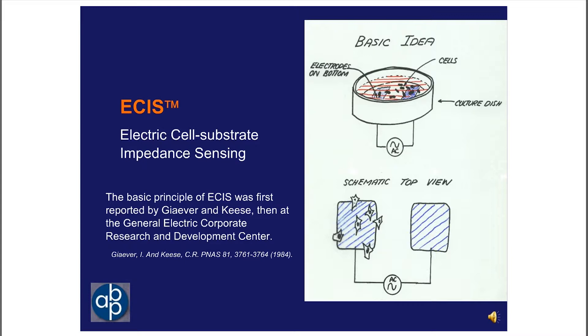This basic idea of monitoring cells electrically came about a number of years ago, when Ivor Gaver and I were at the General Electric Research and Development Center. The idea is quite simple. On the bottom of a tissue culture dish, we affixed gold film electrodes. We applied a very weak AC signal and inoculated these electrodes with cells. To our surprise, if the electrodes were small, such that we could eliminate solution resistance, we could very easily see the activities of the cells. And this idea was published in the Proceedings of the National Academy back in 1984, and this was the first description of ECIS, electric cell substrate impedance sensing.